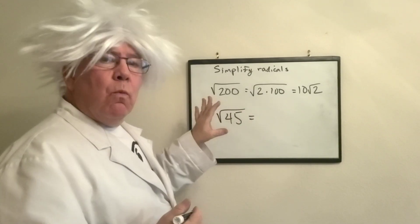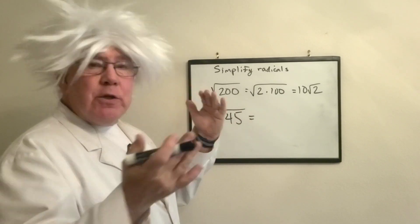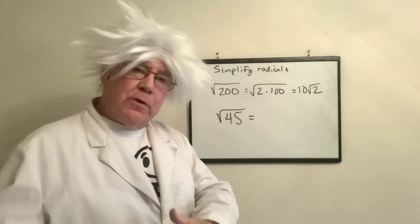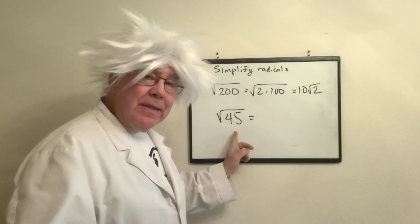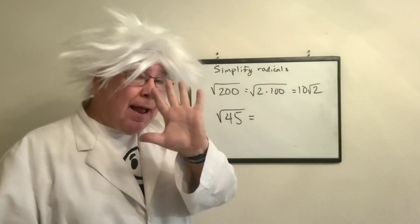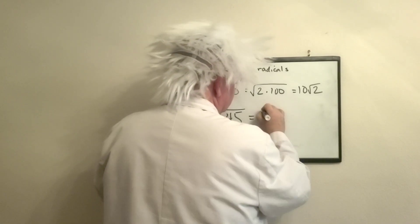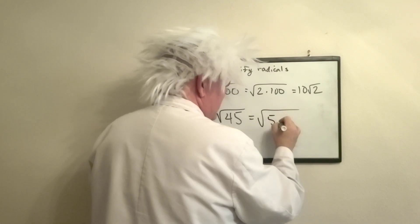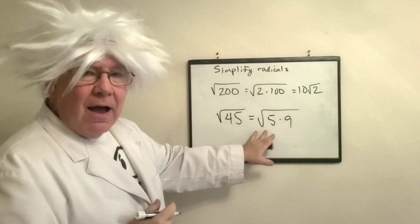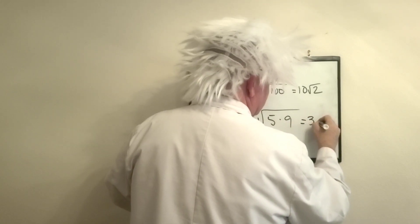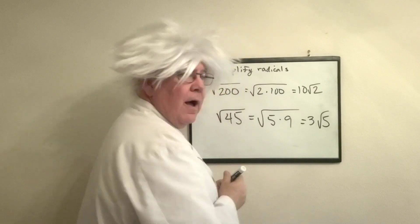Okay, now what's inside 45? You can do this one of two ways, either go with the perfect square or divisibility rule. I'm going with the divisibility rule. Any number that ends in five is divisible by five. So I'm going to take 45 divided by five, I get five and nine. I know five is not my perfect square, but nine is. So the square root of nine is three square root of five.